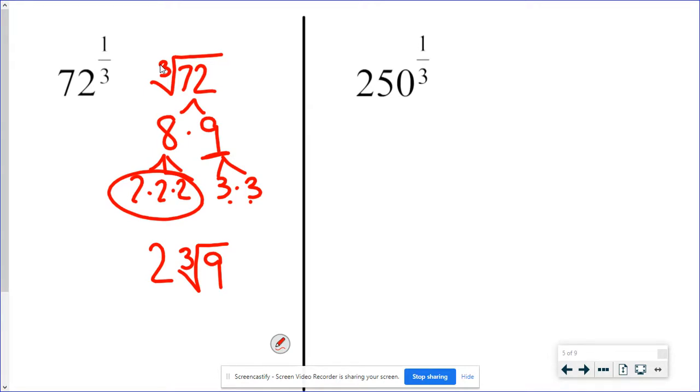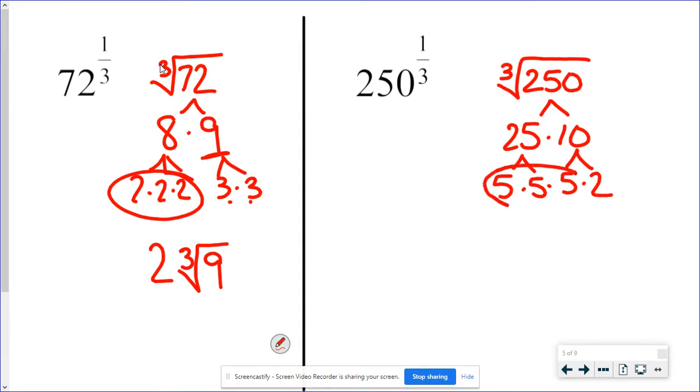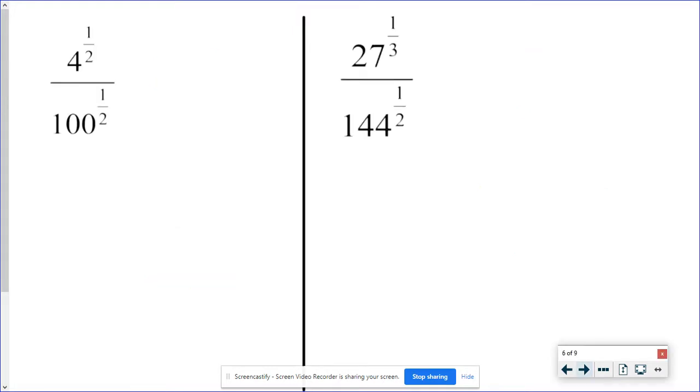250 to the one third would be the cube root of 250. Next easy way to split this up would be 25 times 10. So 25 is going to be five times five. 10 is going to be five times two, right? There's a triple five. That breaks out. The leftover is the two. So five times the cube root of two is my answer there.